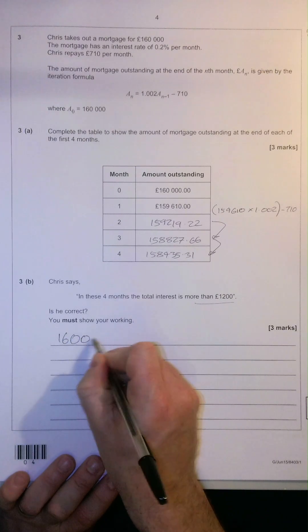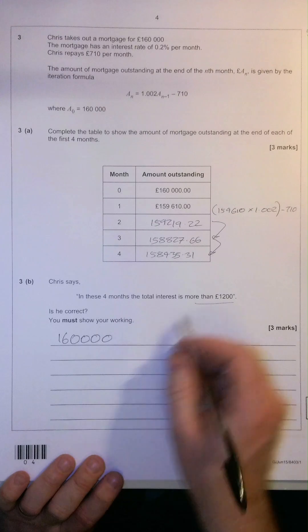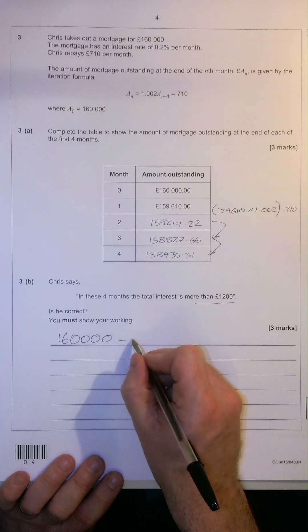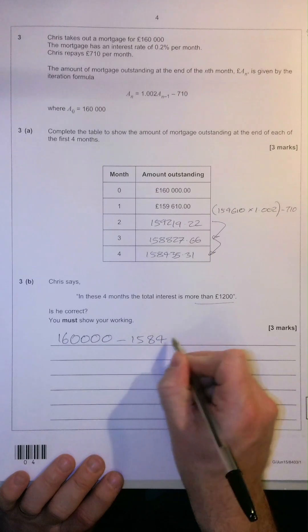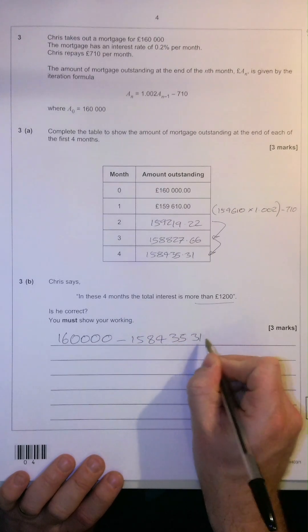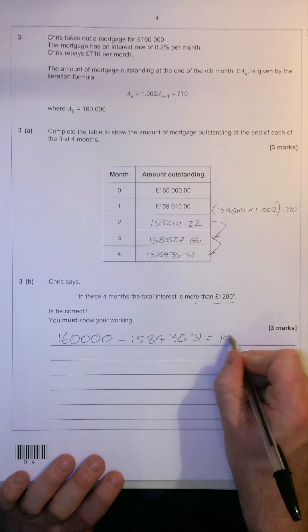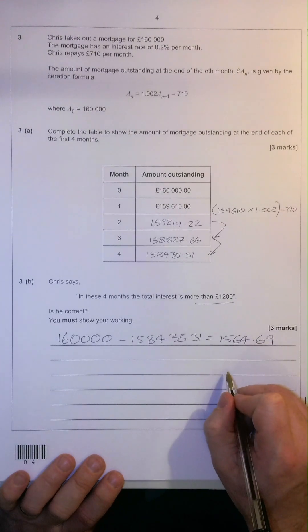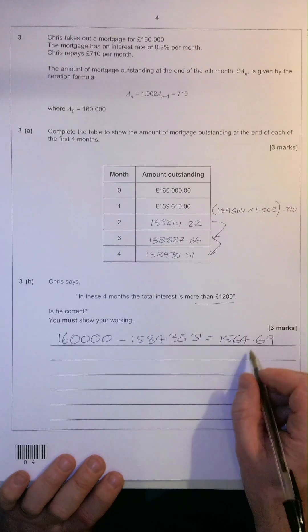We're going to first start off with the total amount of the mortgage. After four months, he still owes this amount, so we're going to take that off, $158,435.31, and that will give us a figure of 1564.69. Now, we need to consider how much of that was actually interest that he paid off.